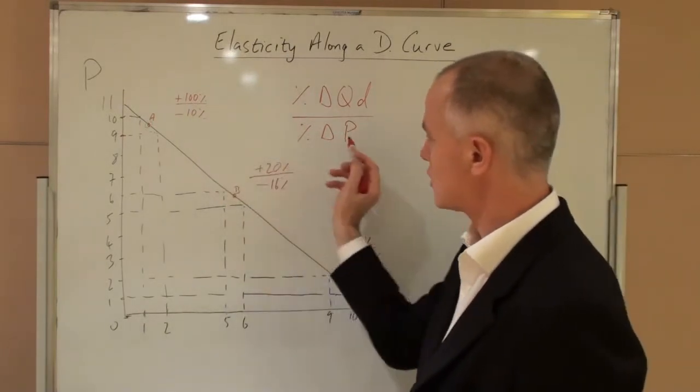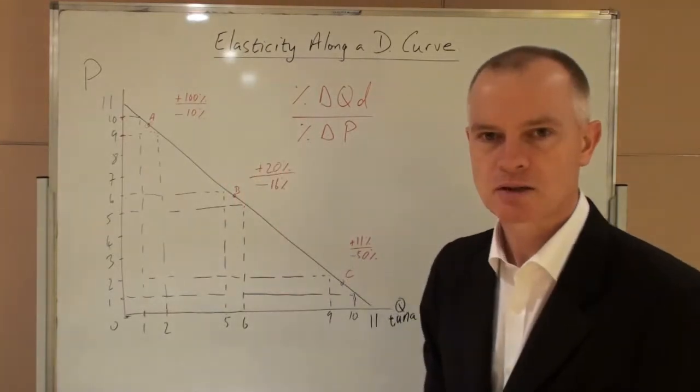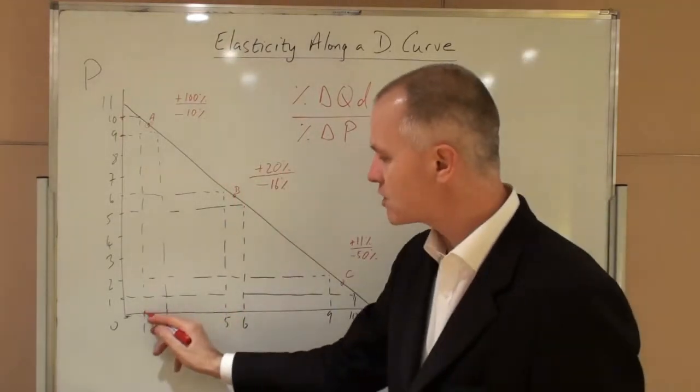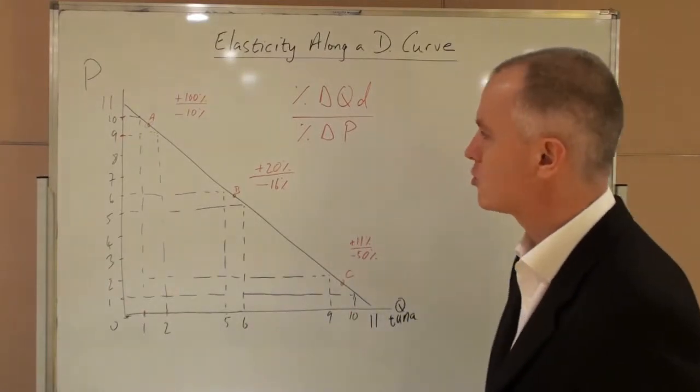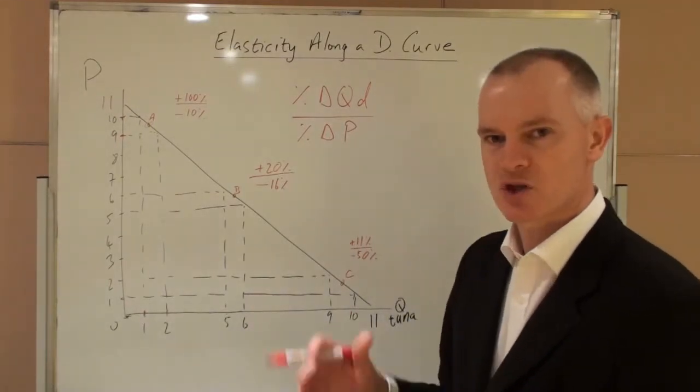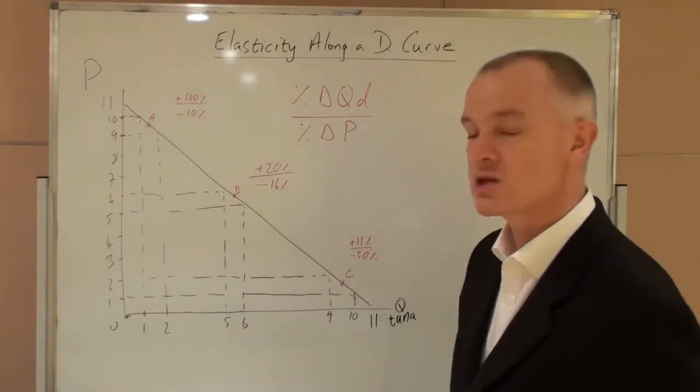Thus, a price change from ten to nine is minus ten percent. This causes an increase in demand of one hundred percent. One to two is a one hundred percent rise. Thus, the change in demand of one hundred percent is much greater than the change in price which caused that.